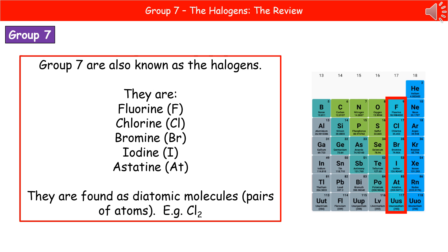Welcome to our review on group 7, the halogens. First, where do we find the halogens on the periodic table? We'll find them in group 7, which means we're going to the right-hand side.